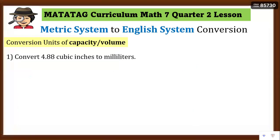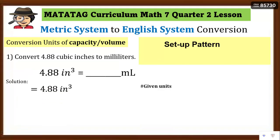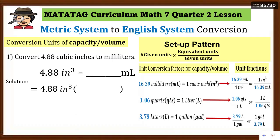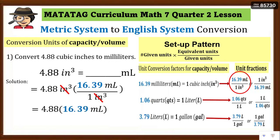Let's convert number 1: 4.88 cubic inches to milliliters. Remember the right equation first, then set up a pattern. Since the given unit is cubic inches and we need to convert to ml, we place the unit fraction with cubic inches in the denominator to cancel it, and ml in the numerator. So we use 16.39 ml over 1 cubic inch. Set up, cancel the cubic inches unit, then multiply: 16.39 ml times 4.88 equals 79.98 ml, rounded to two decimal places.